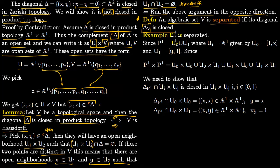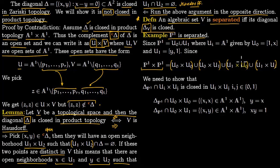Now we come to the main objective: separatedness. An algebraic set V is separated if and only if the diagonal is closed — an analog of the lemma. As an example, P1 is separated. P1 is covered by two sets U0 and U1, each isomorphic to the affine line, given as U0 = (1, x) and U1 = (y, 1). The product is covered by four pieces: U0 times U0, U0 times U1, U1 times U0, and U1 times U1. We need to show the diagonal is closed in the intersection with each of these four sets.